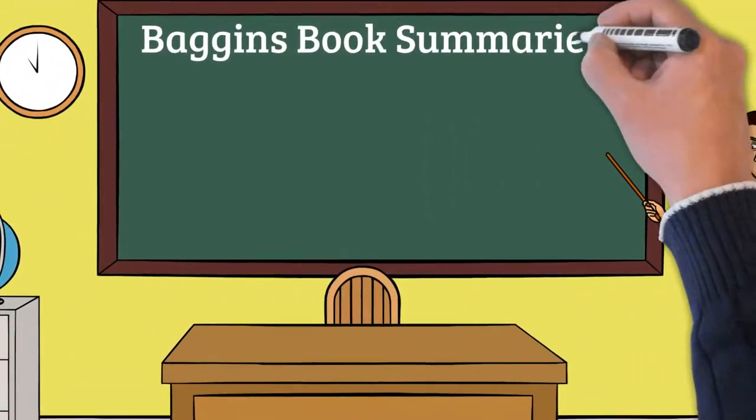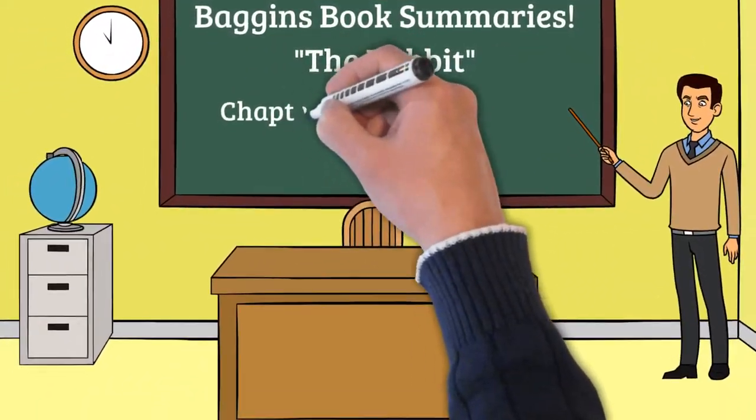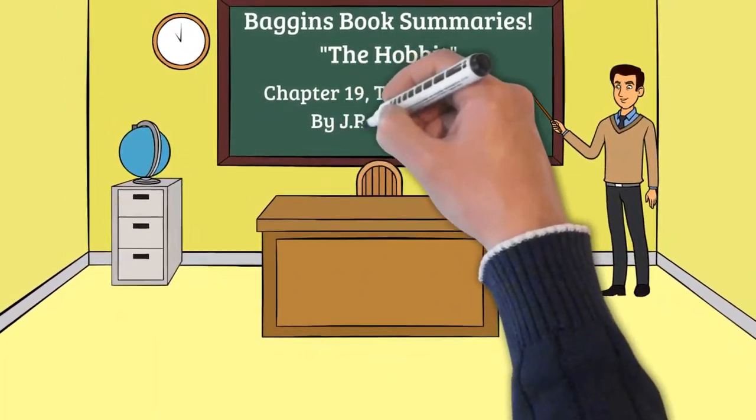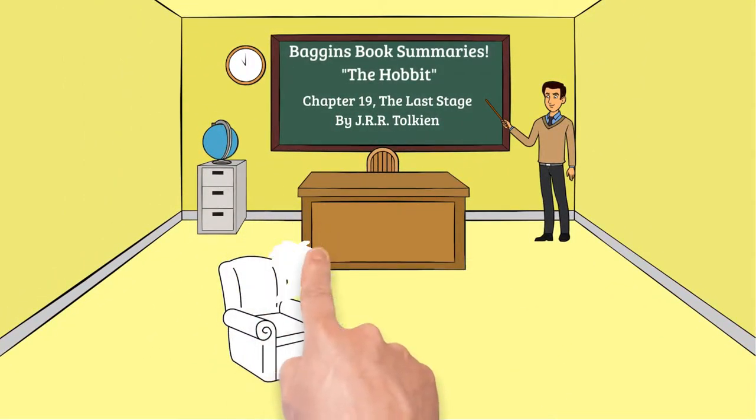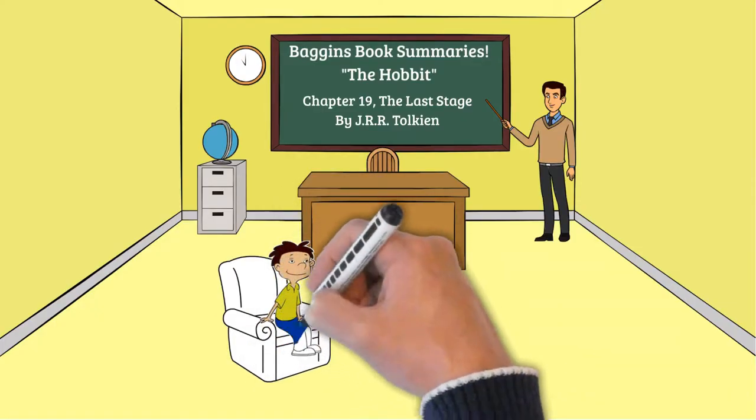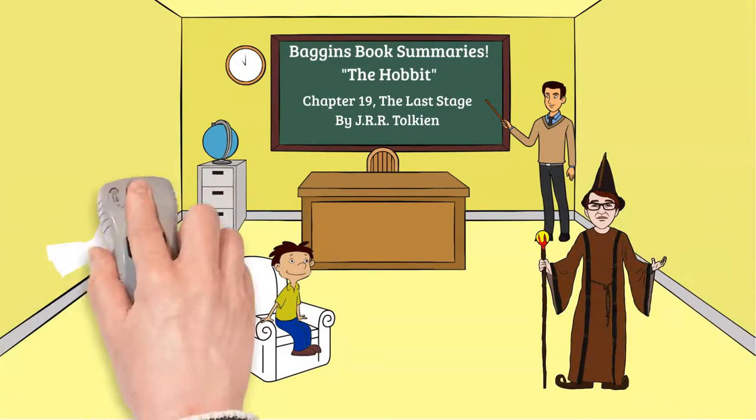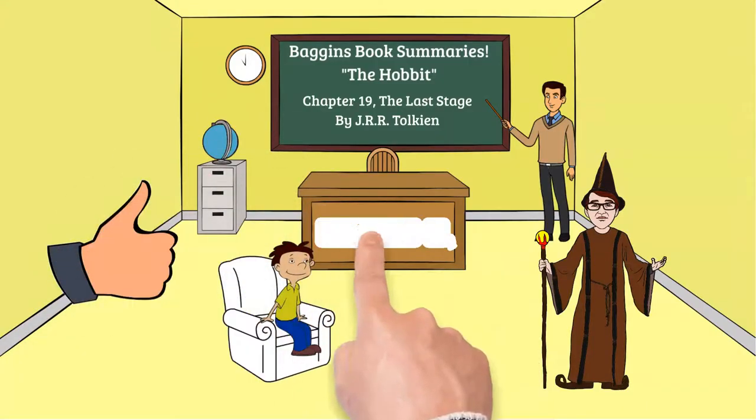Hello and welcome to Baggins Book Summaries. In this episode we'll be concluding our delightful journey through the world of J.R.R. Tolkien's The Hobbit. We last left Bilbo and Gandalf after they had departed Bjorn's house on their way back to Bilbo's home and pick up on the final chapter, encapsulating the themes of homecoming, beauty, and the enduring nature of stories.